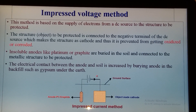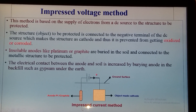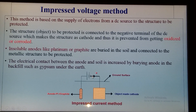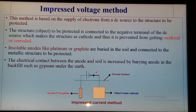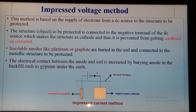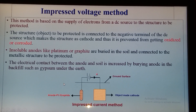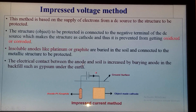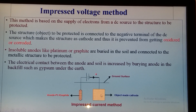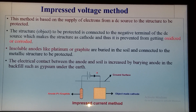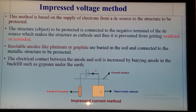In the impressed voltage method, the structure to be protected is connected to the negative terminal of an external DC source. An inert anode, such as platinum or graphite, is also connected and buried in a backfill such as gypsum under the earth to increase electrical contact between the anode and the soil. Electrons provided from the external source make the metal to be protected act as the cathode, thereby preventing corrosion.